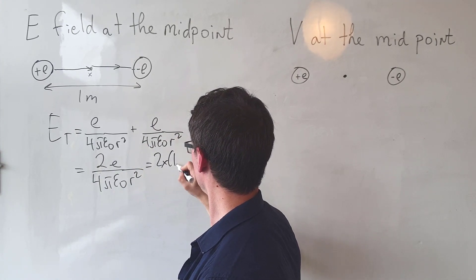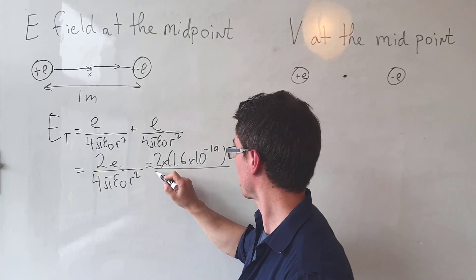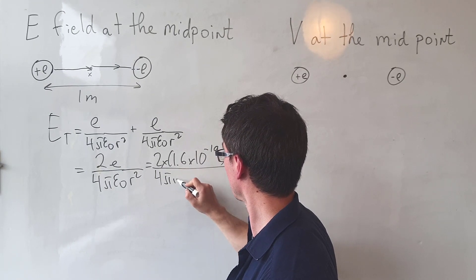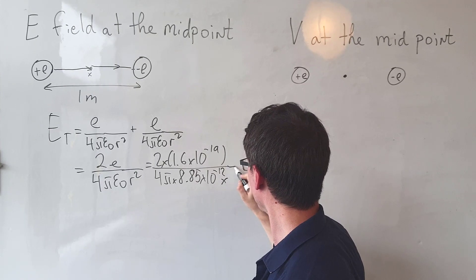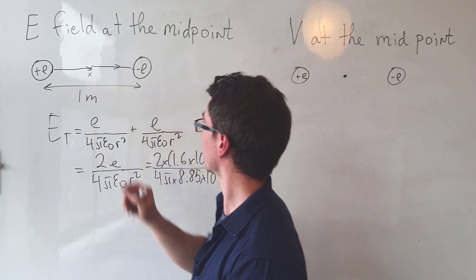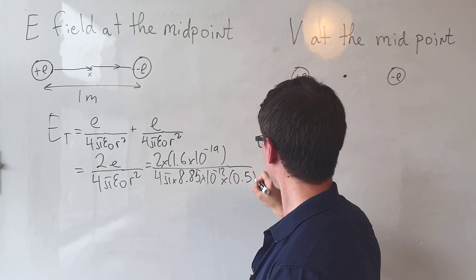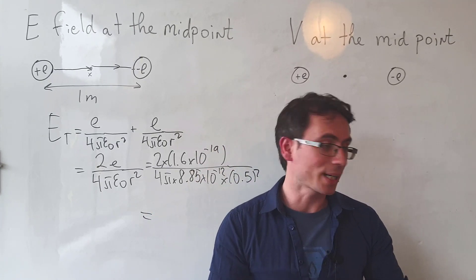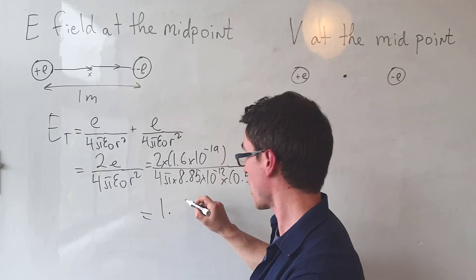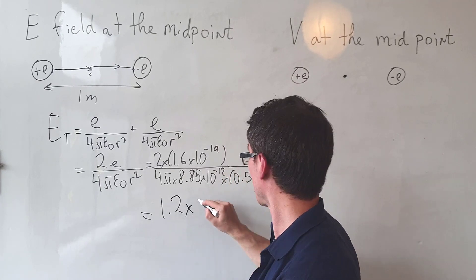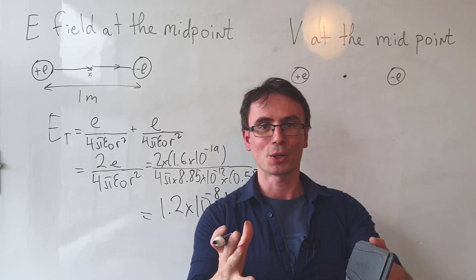Which is equal to 2 times 1.6 times 10 to the power of minus 19, divide that by 4π times 8.85 times 10 to the power of minus 12 times the midpoint distance squared. So it's going to be 0.5 squared. And if we put this into a calculator, we get 1.15, let's call it 1.2 times 10 to the power of minus 8 newtons per coulomb.